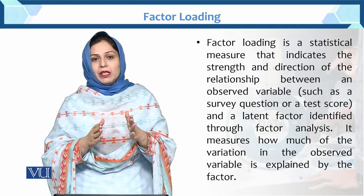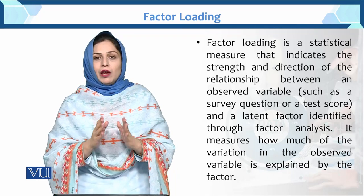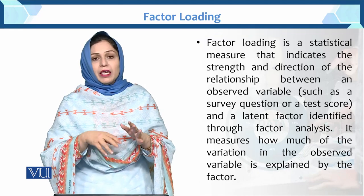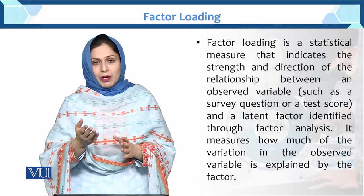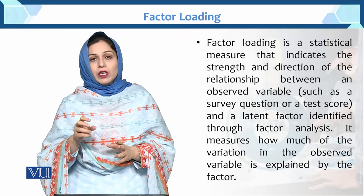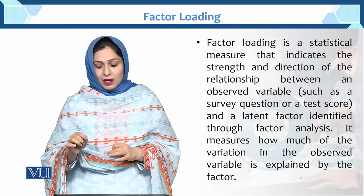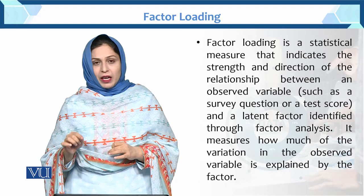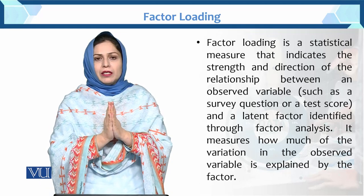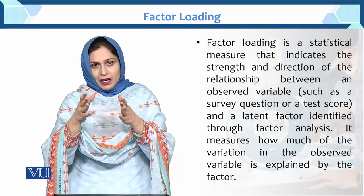These variables — we need to check how many factors will be formed from them. For example, if we have ten variables, how many factors can we create from those ten variables? There is a whole procedure for that. For instance, if a factor explains 68% of the variation of the observed variables, we say that 68% of the variation is being explained by these factors.